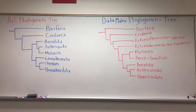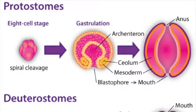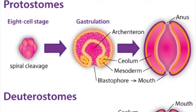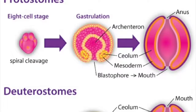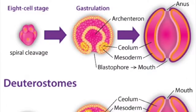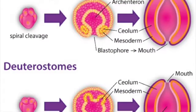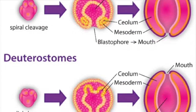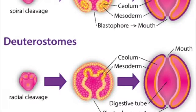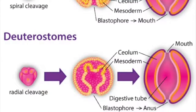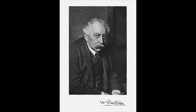More specifically, the 16S tree we constructed in class groups organisms together based on whether the organisms in the clade are protostomes, deuterostomes, or neither. Hemichordata is in the clade representing deuterostomes, and the most closely related taxa are echinoderms and chordates.